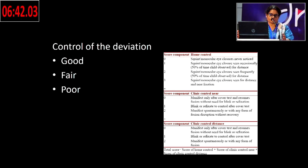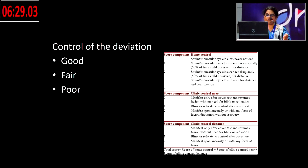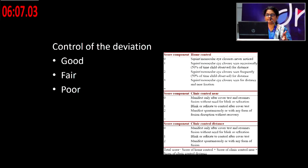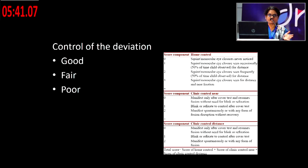Deciding whether to treat intermittent exotropia is the real challenge. Because it is intermittent, you don't want to treat it and make it constant. You must assess the control of the deviation. Control can be good, fair, or poor, and you can often determine this as soon as the child enters the office. Many parents only notice the deviation when someone else points it out. Though various scoring systems exist, clinical judgment is key — don't rush to surgery.